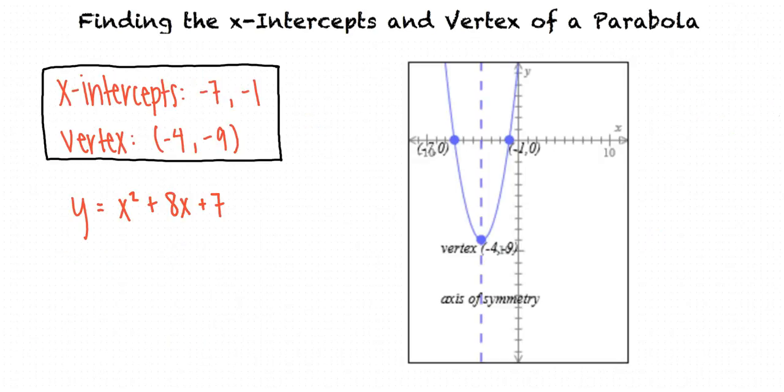We can see from the graph that the parabola opens up, which makes sense because the coefficient of the x squared term is positive. This understanding helps us check our work.